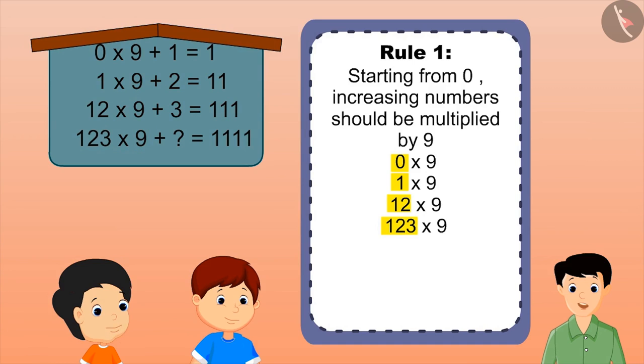Very good. And see, the numbers which are added are counting numbers, such as 1, 2, 3. So, following this rule, the next number would be 4.